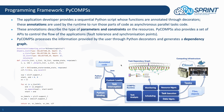PyCOMPS processes the information provided by the user in Python decorators and generates a dependency graph that represents the execution flow of the user code on available resources. It is important to highlight that the same code can run on different backends, including HPC clusters, clouds, and containerized environments.